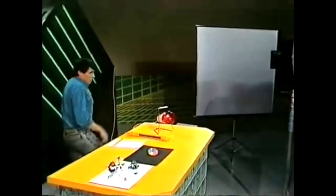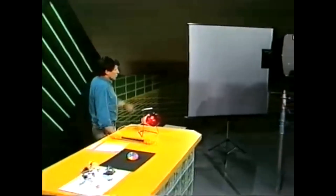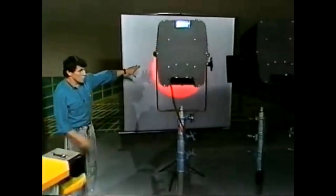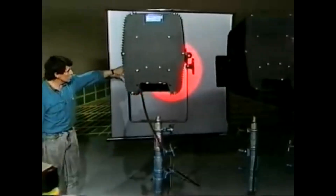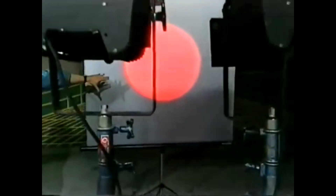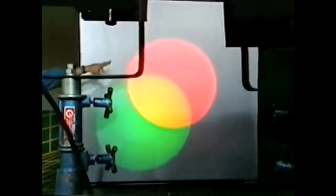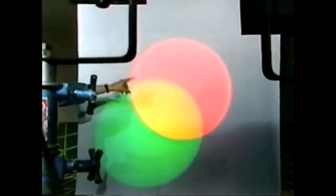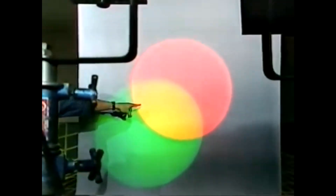There are other ways of combining those colours. Come with me. We'll have a look at this screen and put on it a spot of red light from one of the studio lamps, and then we'll put a second spot overlapping with that one — green light. And you can see where red and green mix, we get a yellowy orange colour.